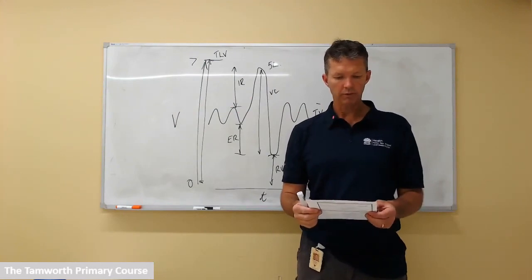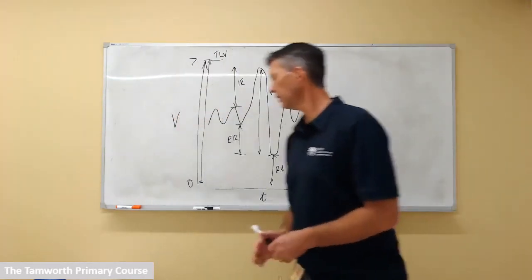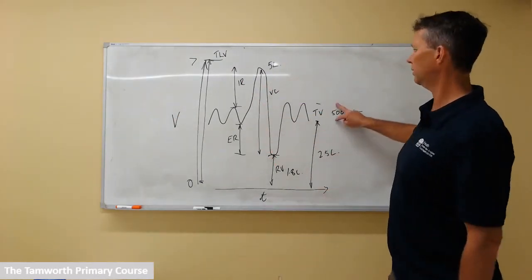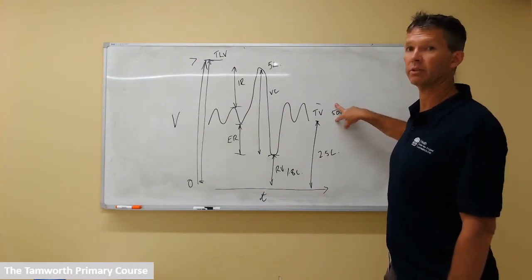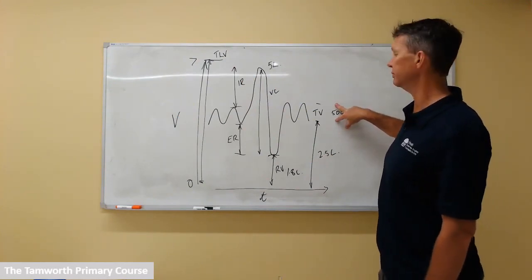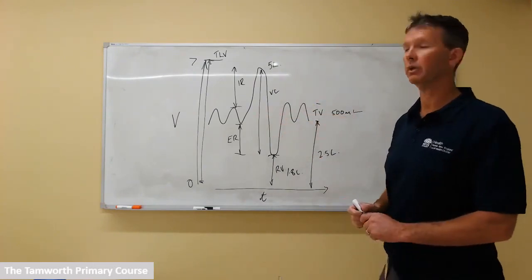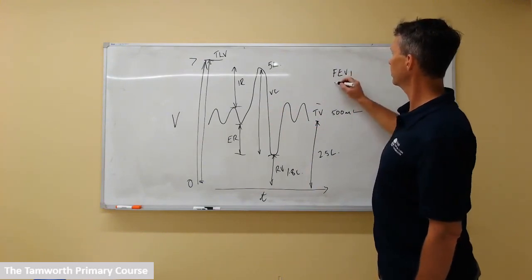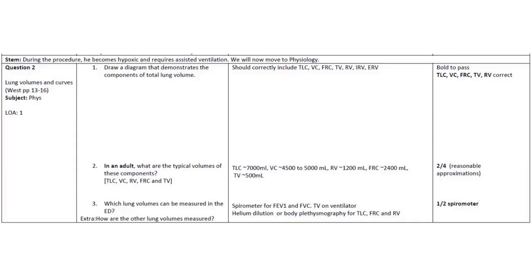Which lung volumes can be measured in the ED? Volumes measurable in the ED, on this diagram, are the tidal volume, if we have someone on a ventilator we can determine that or measure it, and then derivatives of these values, such as FEV1 and forced vital capacity or FVC.